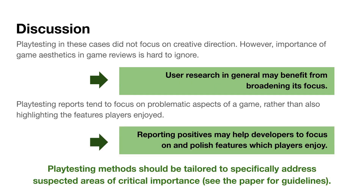In each of these cases, we also saw that playtesting didn't focus on creative direction — things like aesthetics, sound, and so on. The importance of these features in reviews is really hard to ignore. When coding these reviews, as we saw with Game A, things like sound can be really important to critical reception when you're looking at the whole package of a game. Playtesting reports tend to focus on problematic aspects, but critical reception also covers positives and a game's core appeal. Reporting on positives in playtesting reports can help developers identify the features that critics and players will see as a draw, helping them focus on further development and polishing those features.